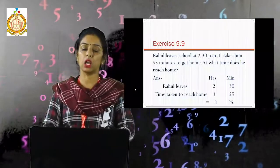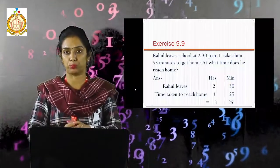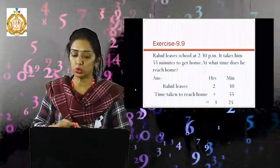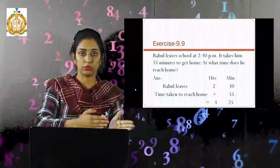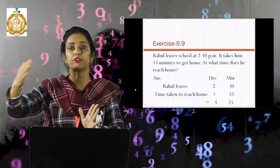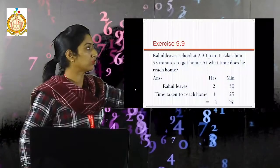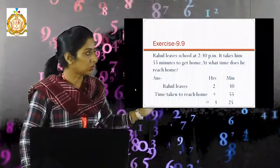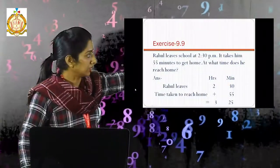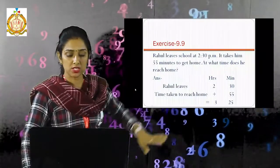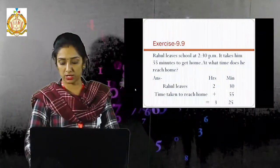Now see the word problem. Rahul leaves school at 2:30 PM. It takes 55 minutes to get home. What time does he reach home? Write hours and minutes: 2 hours 30 minutes plus 55 minutes. 30 plus 55 equals 85 minutes, which is 1 hour 25 minutes carry over, so 2 plus 1 equals 3. He reaches home at 3:25 PM.